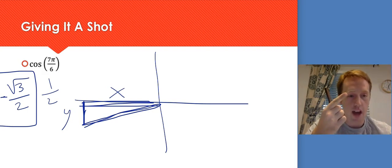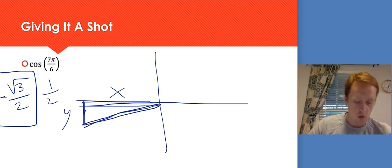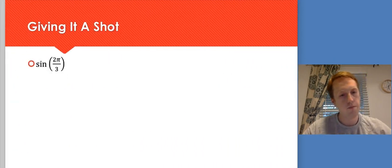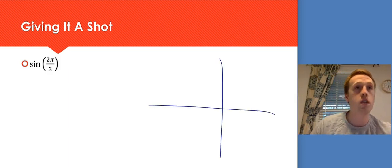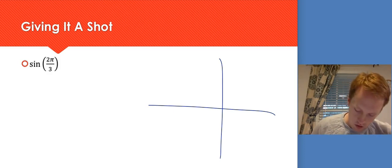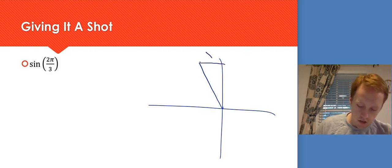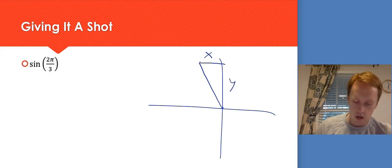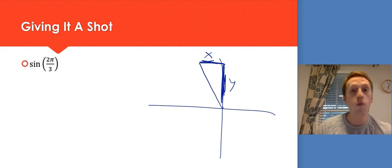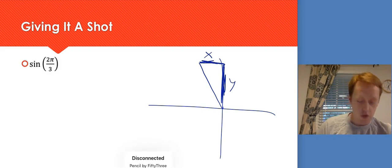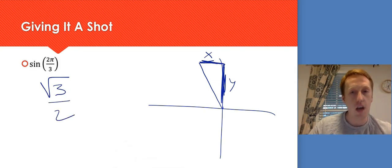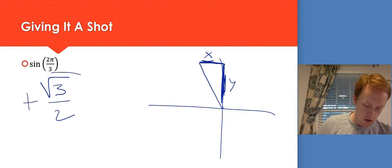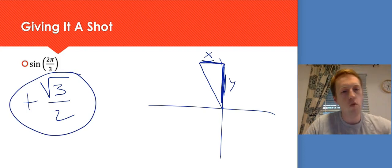Figure out where you are by reasoning with the fraction, then figure out which number applies because you know which values are paired together. Let's do another one: sine of 2π/3. Think about 2/3 — smaller than 1, but definitely bigger than 1/2, so it's up here in quadrant 2. I'll draw a triangle. The horizontal distance is my x, the vertical distance is my y. The y distance is bigger here, so I want the bigger number, which is √3/2. Since I'm above the x-axis, the y value is positive — so the answer is √3/2.